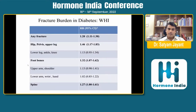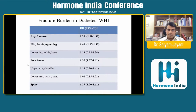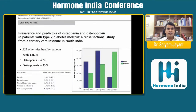As per WHI data, fracture burden in diabetic patients increases the risk at every site, but the most common sites are hip, pelvis, and upper leg, followed by foot bones. A study conducted at PGI found the prevalence of osteopenia and osteoporosis at around 40 and 33 percent respectively in individuals with type 2 diabetes.